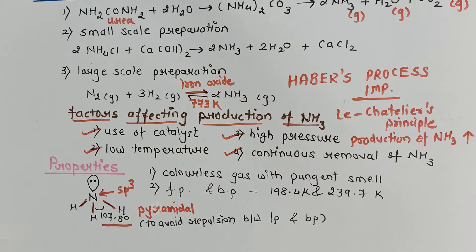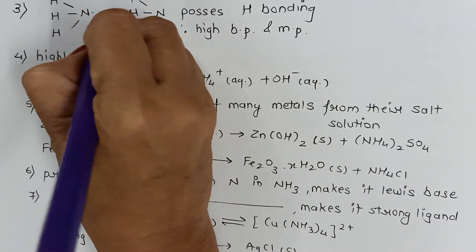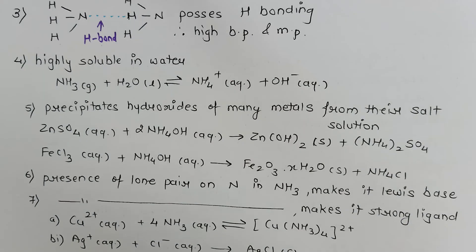Ammonia is a colorless gas with a very pungent smell — you may have experienced this during salt analysis in the laboratory. Its freezing point is 198.4 K, but its boiling point is comparatively high at 239.7 K. The reason for the high boiling point is that ammonia molecules are associated by hydrogen bonding, and more hydrogen bonding leads to a higher boiling point.